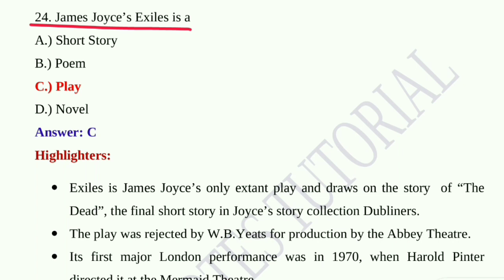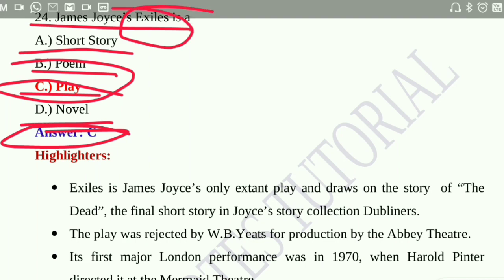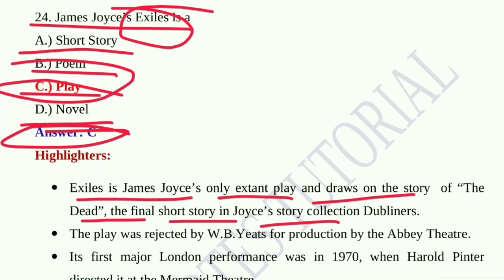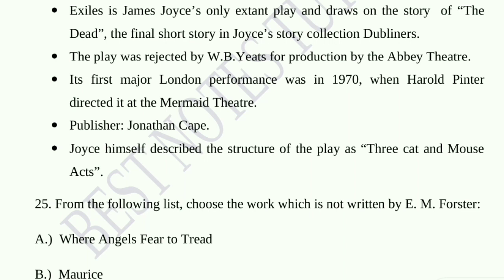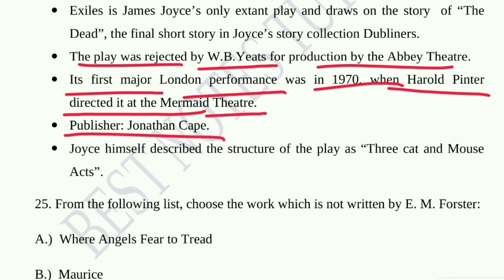Question number twenty-four: James Joyce's Exiles is a short story, poem, play, or novel? Option C, play, is the correct answer. Exiles is James Joyce's only extant play and draws on 'The Dead,' the final short story in his collection Dubliners. The play was rejected by W.B. Yeats for production by the Abbey Theatre. Its first major London performance was in 1970 when Harold Pinter directed it at the Mermaid Theatre. Joyce himself described the structure of the play as 'three cat and mouse acts.'